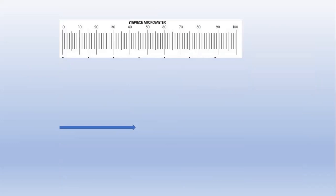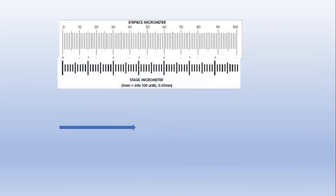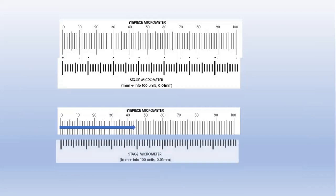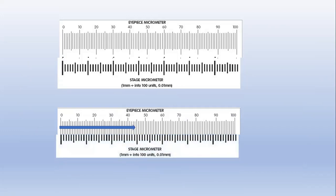The eyepiece micrometer is not a calibrated one. Just below it, we have to arrange a stage micrometer. When calibrating the eyepiece micrometer using the stage micrometer, we have to arrange both so that their starting lines coincide with each other. Both starting lines are set at a particular zero location.